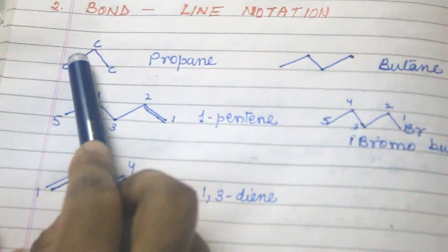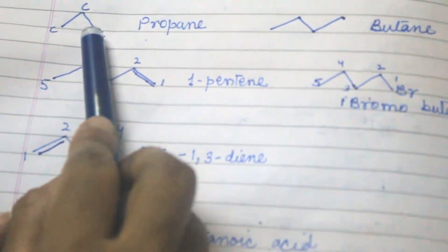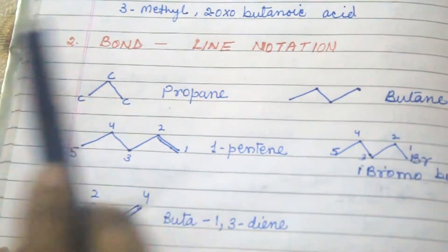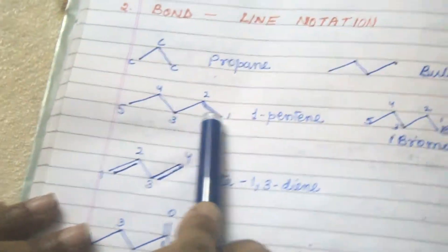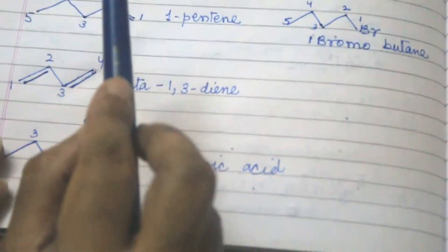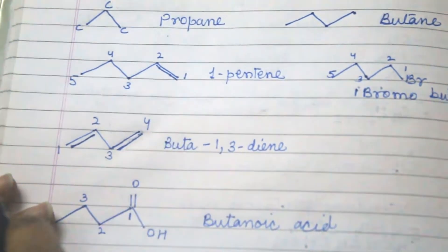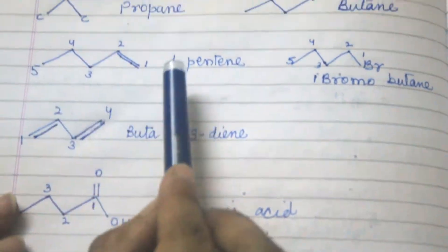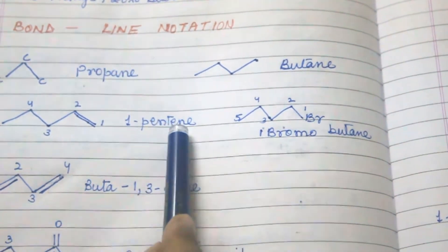Now we come to bond line notation. In bond line notation, each corner represents a carbon atom. For example, three corners means propane. One, two, three, four corners means butane. Here the double bond is the only functional group, and there are five carbons according to the corners, so its name is 1-pentene.